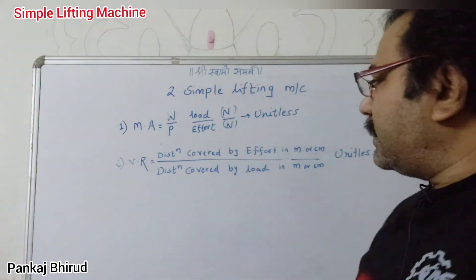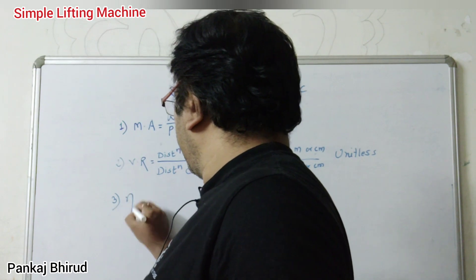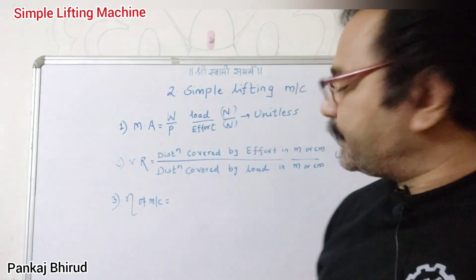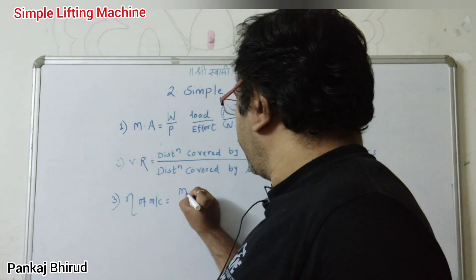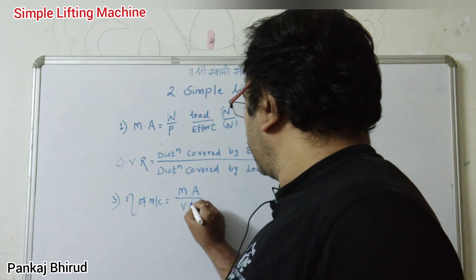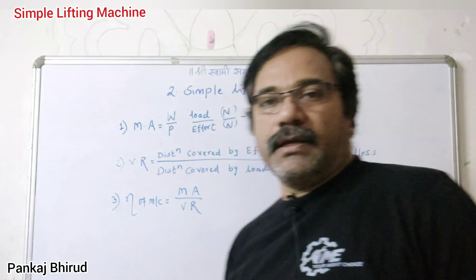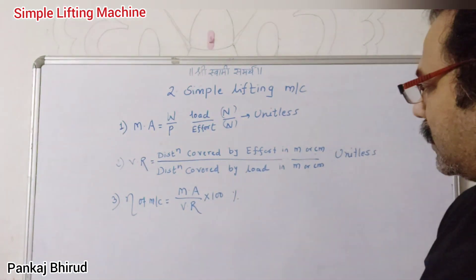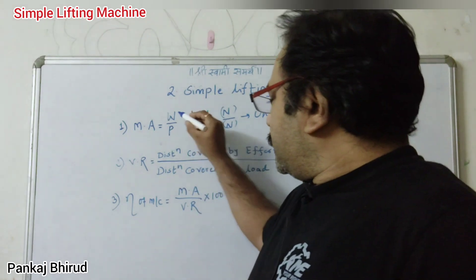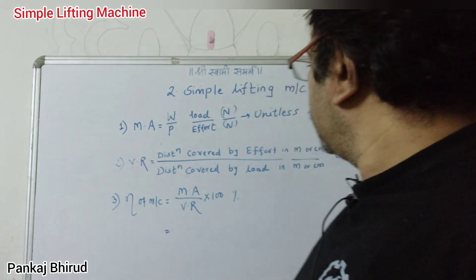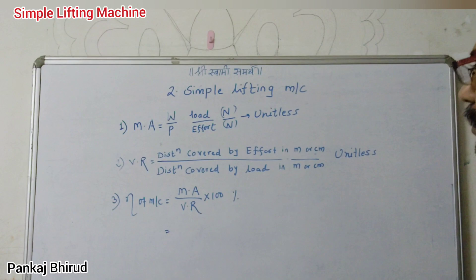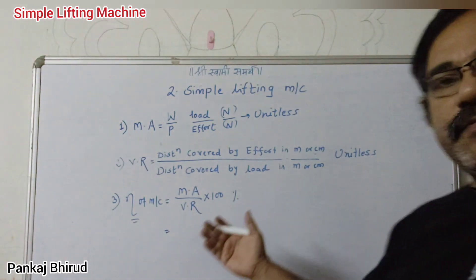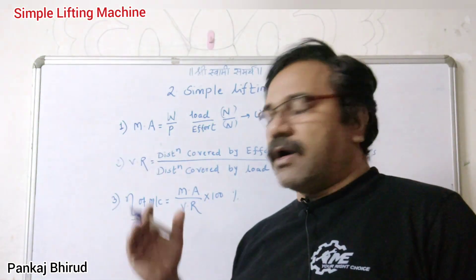The next one is the efficiency of the machine, expressed as a percentage. It is a ratio of MA to the VR — MA upon VR into 100 — and that will give the efficiency in percentage. Also, we can say efficiency is equal to output upon input.